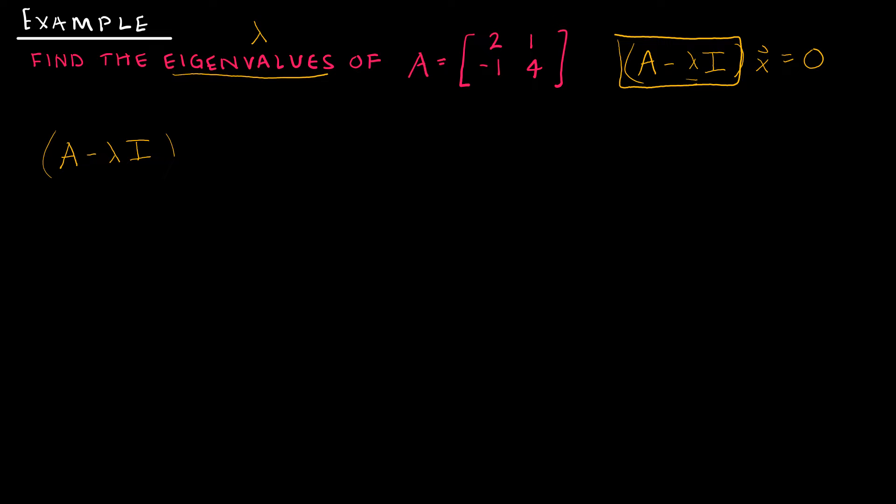Let's take a look at actually doing some of this. I'm finding A minus lambda I. So I'm taking [2, -1; 1, 4]. I'm subtracting lambda I, which is just [λ, 0; 0, λ]. So my resulting matrix is [2-λ, 1; -1, 4-λ].